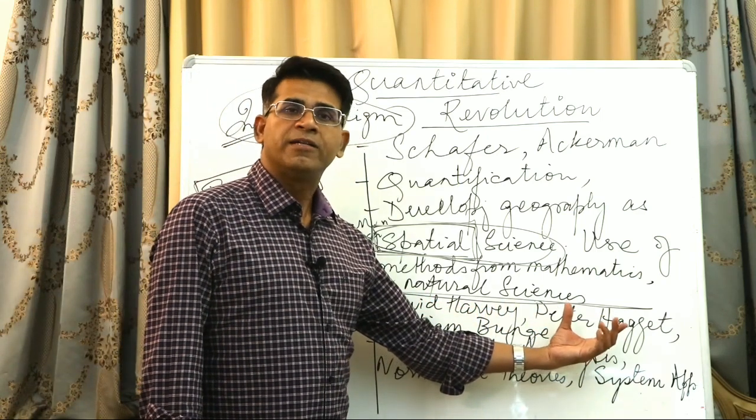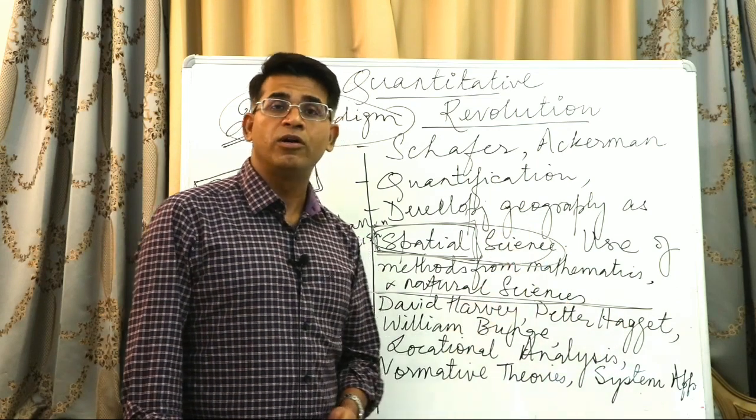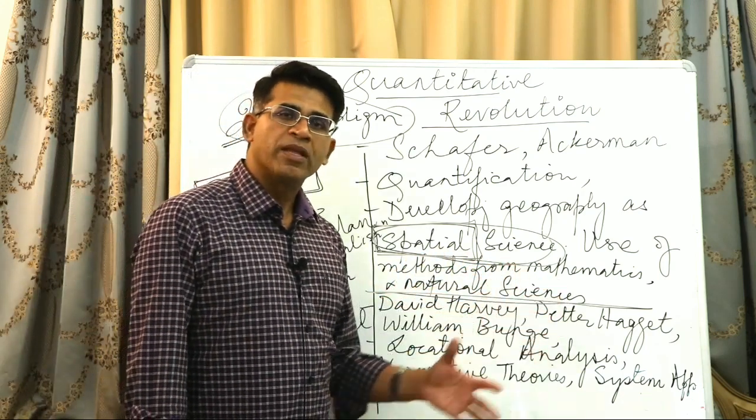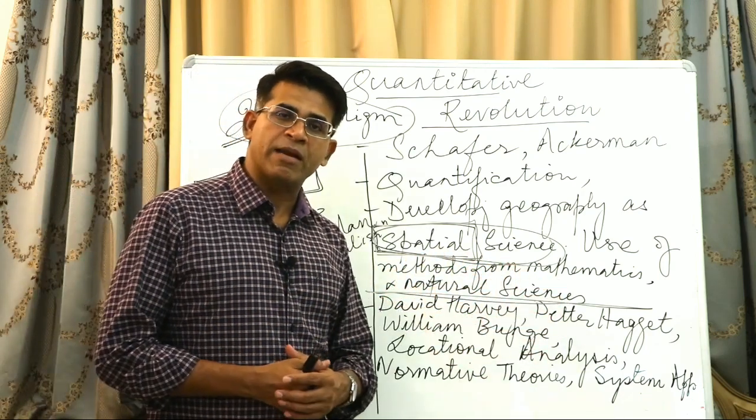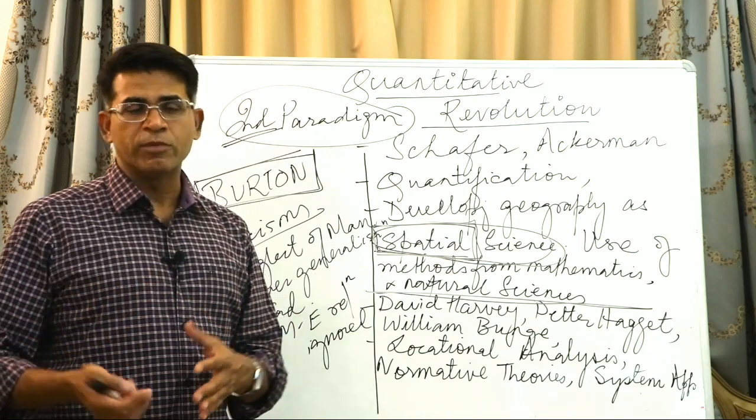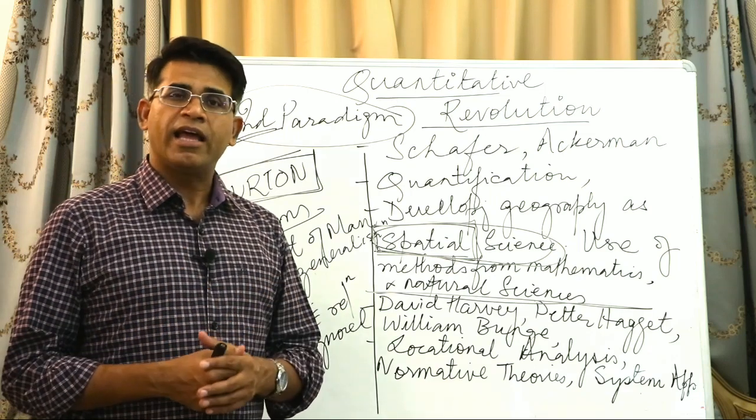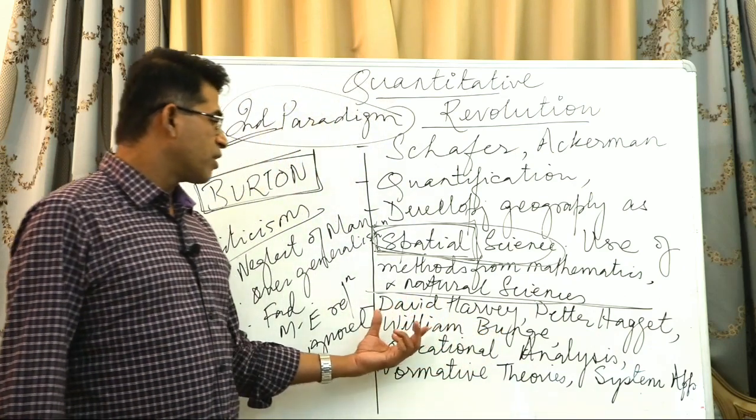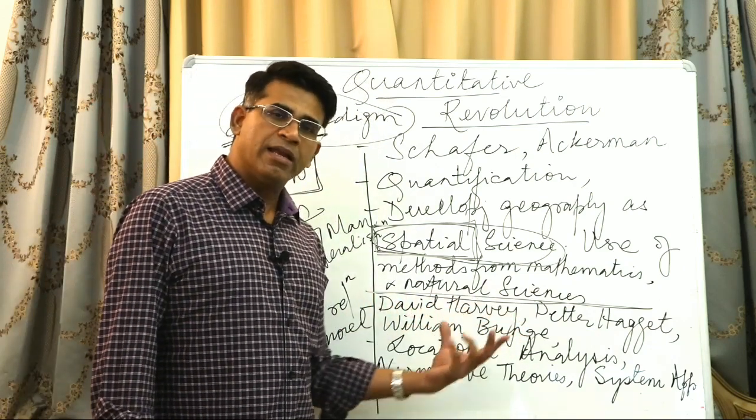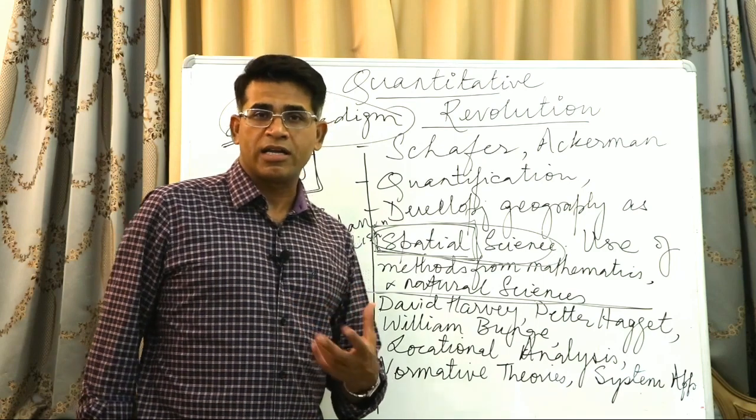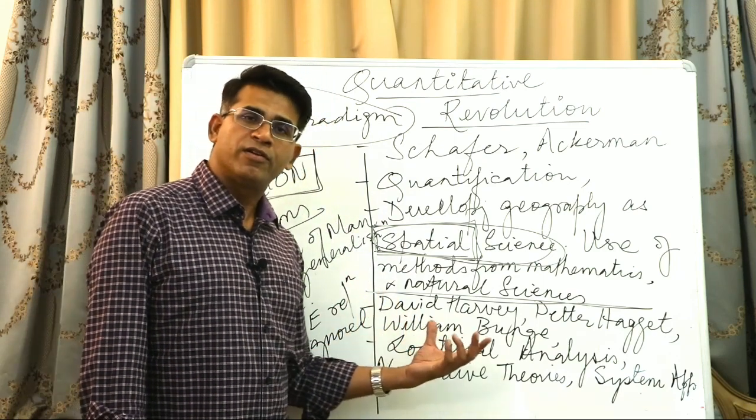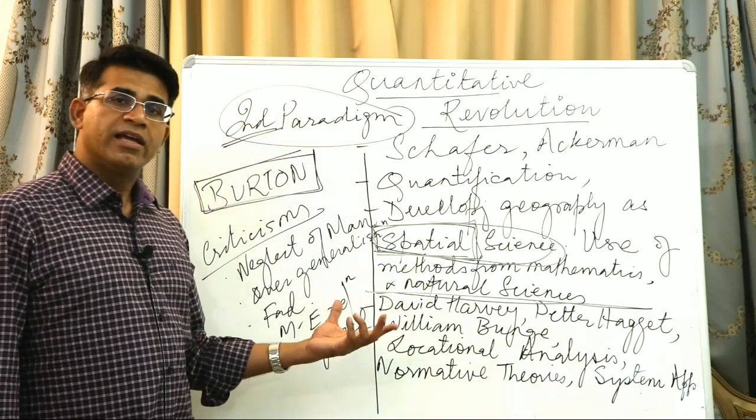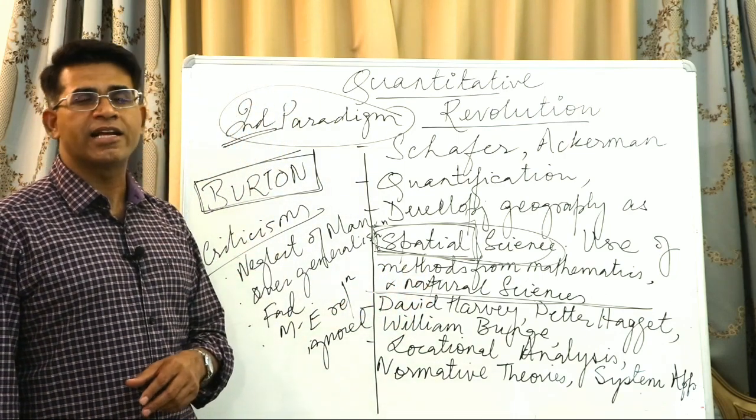Peter Haggett wrote the famous book Location Analysis in Human Geography. He develops a technique for how phenomena and elements can be studied using principles of systems approach and elements of geometry. Then the works of William Bunge—this man was another very important proponent of quantification, but like David Harvey, he ultimately shifts towards radical approach again.